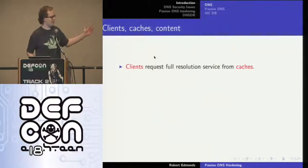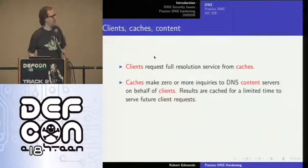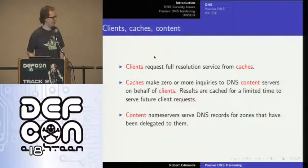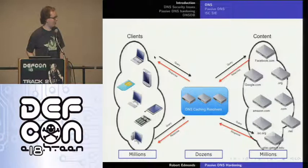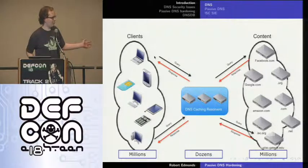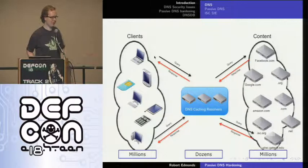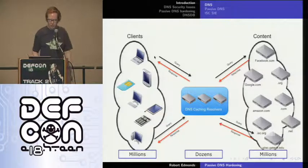Some terminology: we have clients, caches, and content. There are three fairly well-defined roles in the DNS. Clients request full-resolution service from caches. Caches make zero or more inquiries to content servers on behalf of clients, and the results are cached. Content name servers serve the DNS records that have been delegated to them. An ISP might have millions of clients — phones, laptops, whatnot — and there are millions of content name servers, but you have very few DNS caches. Even the largest ISPs have around 100 DNS caches or less.